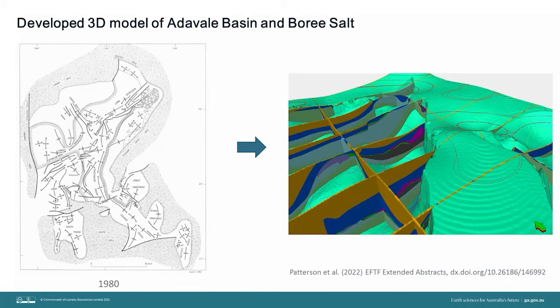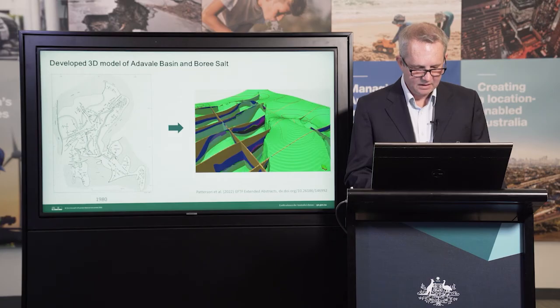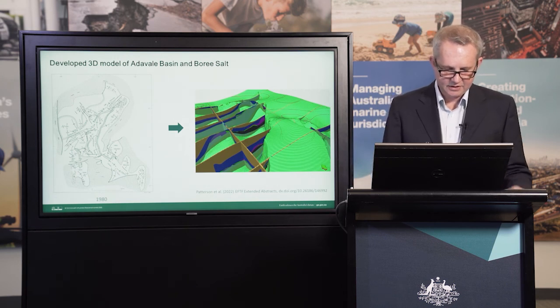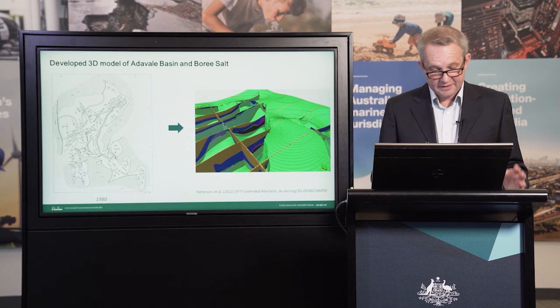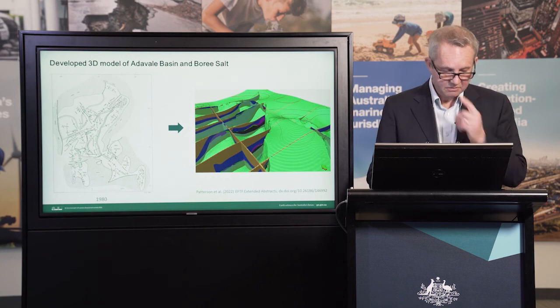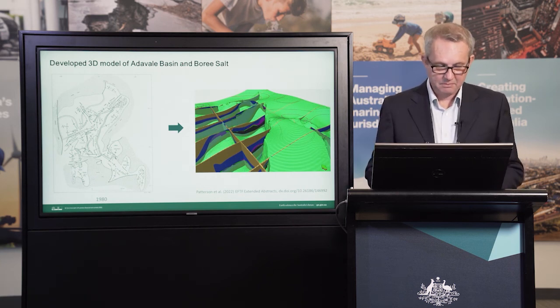Getting a better handle on the size and extent of this resource has been a priority for us. Mapping of the Ada Vale Basin hasn't really progressed much since 1980, and even that was largely based on 1967 analysis. In collaboration with Intrepid Geophysics and the Queensland Geological Survey, we have built a preliminary 3D model of the Ada Vale Basin, with a particular focus on the Boree salt. We have mapped three salt bodies, and I would refer you to the extended abstract released as part of this showcase for more details. Given the lack of wells and good seismic in this area, there are still many unknowns, and there's a real need to acquire more data to better map this important salt resource.